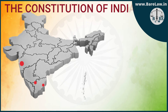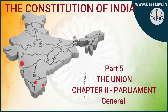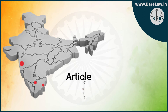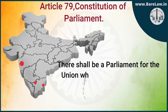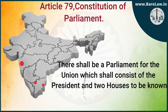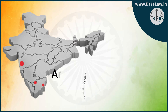The Constitution of India, Part 5 — The Union. Chapter 2 — Parliament. General. Article 79: Constitution of Parliament. There shall be a Parliament for the Union which shall consist of the President and two Houses to be known respectively as the Council of States and the House of the People.